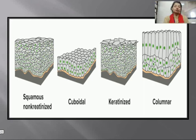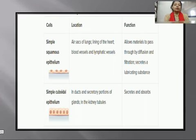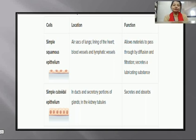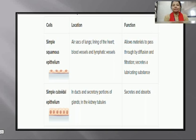Simple squamous tissue is located at the air sacs of the lungs and lining of the heart, blood vessels, and lymphatic vessels. Its function is to allow material to pass through by diffusion and filtration, and it secretes lubricating substances.